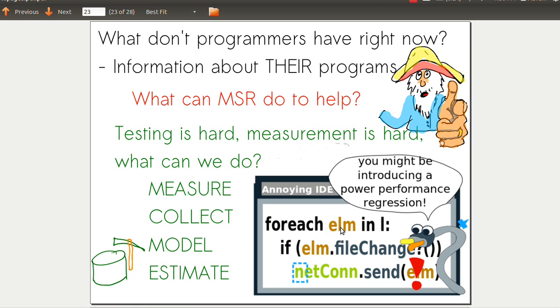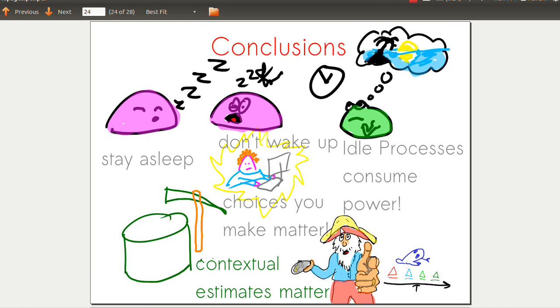What can we do right now? How can mining software repositories help programmers? Programmers don't have information about their programs right now, but they want to act. MSR can help by doing the hard stuff - the testing and measurement. We can do the measurement, collection, testing, modeling, and estimation to provide contextual estimates to developers so they can address power without a lot of pain.